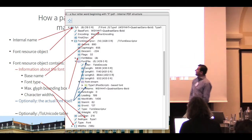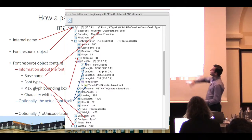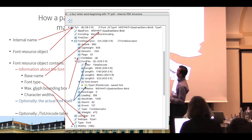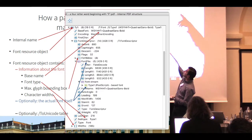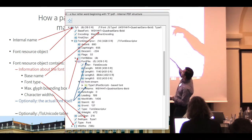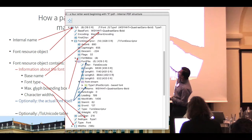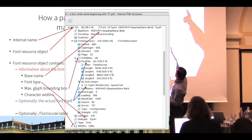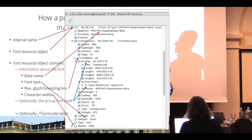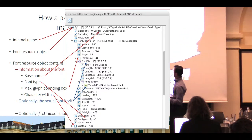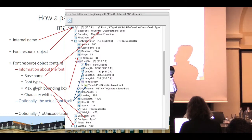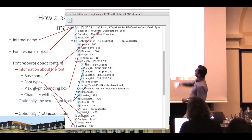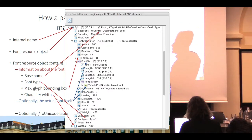This is from our PDF browser — Explore PDF in PDF Toolbox — where you can look at the internal PDF structure. I've indicated with arrows where you can see that information. There is an internal name — in this case TY1 — you have the font resource in the PDF part, the base name is Quadrat Sans Bold with a prefix, the font type is Type 1, the bounding box with character widths as an array. We have 185 characters and for each we have the width, and we have the actual font embedded — which in this case is Type 1.